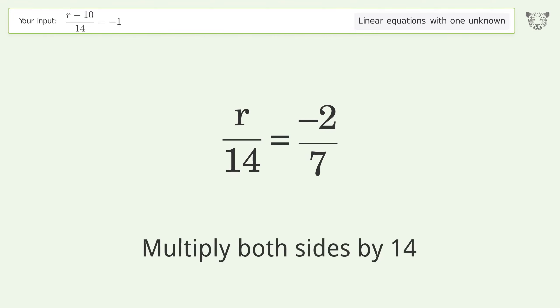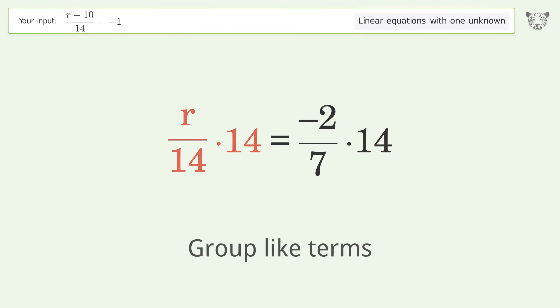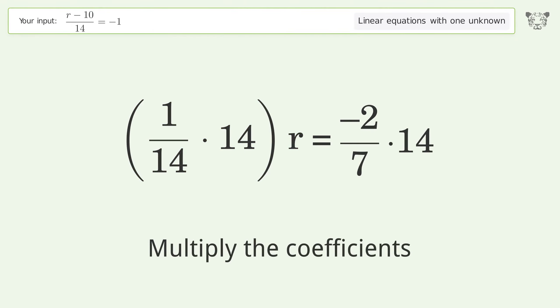Multiply both sides by 14. Group like terms. Multiply the coefficients.